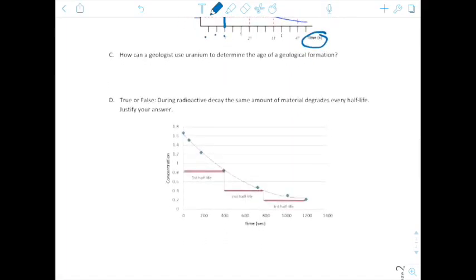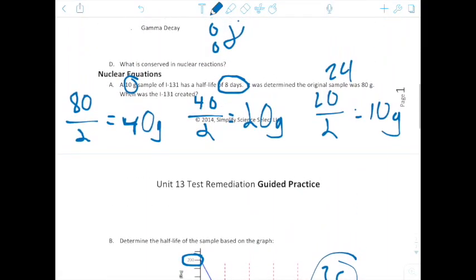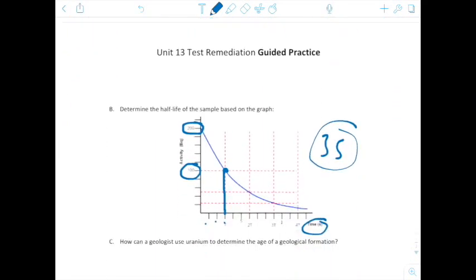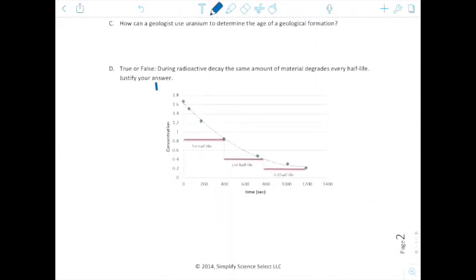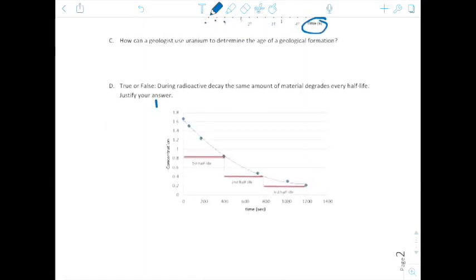True or false, during a radioactive decay, the same amount of material degrades every half-life. Justify your answer. So let's think about this. Yes, half of the sample is decaying, but on our first half-life we went from 80 to 40. Second half-life we went from 40 to 20. Third half-life we went from 20 to 10. So is it true that the same amount of material it degrades every half-life?